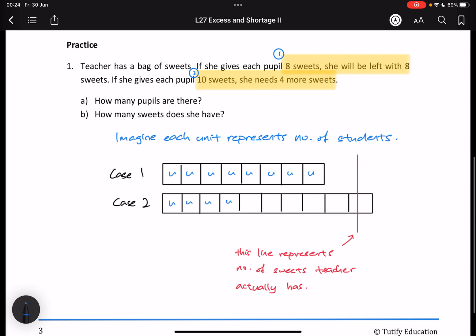they say each student receives ten sweets. That means I need five, six, seven, eight, nine, ten units of sweets. So, if you are left with eight sweets, you have extra sweets. So, I'm going to say that this is an excess.